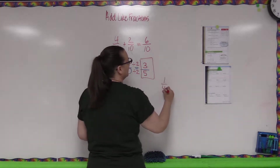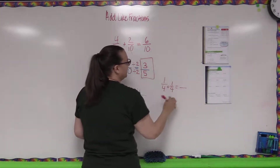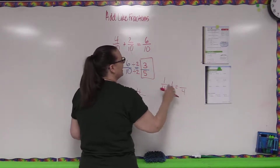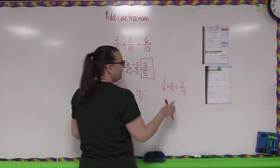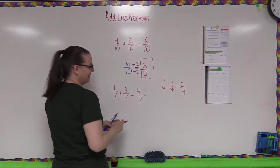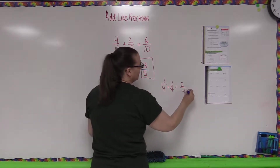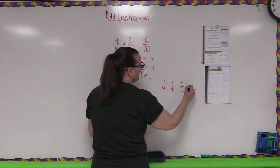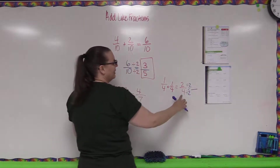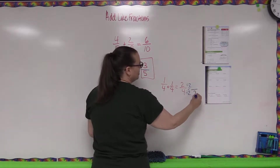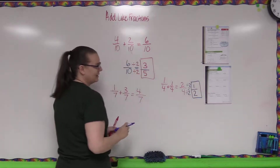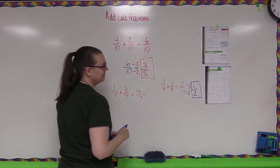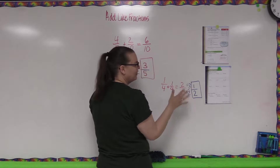Number two: one-fourth plus one-fourth. Keep the denominator the same and add the numerators — one plus one is two, giving two-fourths. This can be simplified since both numbers are even: divide by two. Four divided by two is two, and two divided by two is one. So the simplified fraction is one-half.